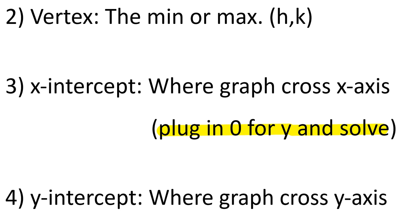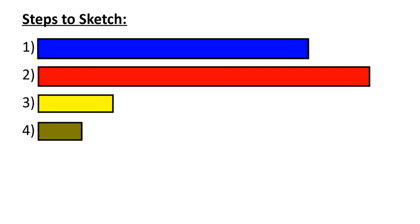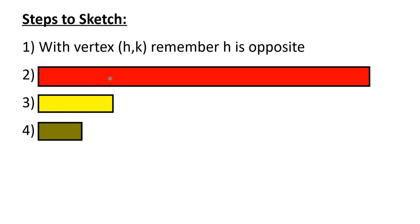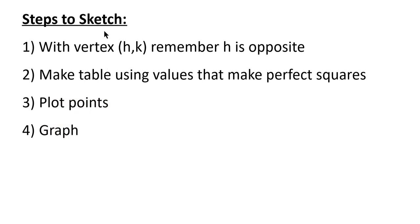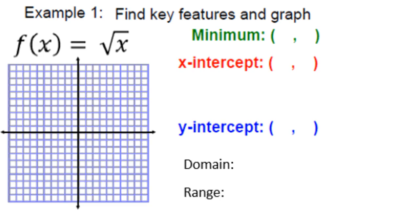The steps to actually sketching a square root: first, find the vertex — remember h is always opposite, so get that vertex first as your starting point. Then make a table using values that make perfect squares. Then plot those points and graph the curve.